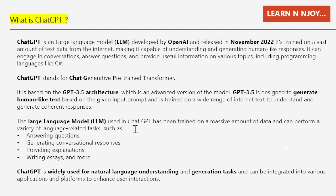First things first — what exactly is ChatGPT? ChatGPT is an advanced large language model developed by OpenAI and released in November 2022. It's trained on a vast amount of text data from the internet, making it capable of understanding and generating human-like responses. It can engage in conversations, answer questions, and provide useful information on various topics including programming languages like C#.